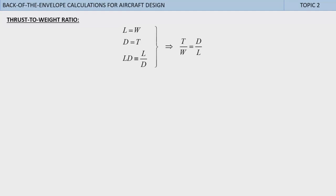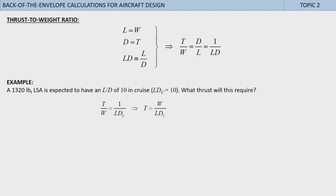From this it holds that by dividing the second equation by the first one, we can say that the ratio of thrust to weight is equal to the ratio of drag to lift, or alternatively, the inverse of the lift-to-drag ratio. The thrust-to-weight ratio is another super-important design parameter in aircraft design. Now let's apply it to determine the thrust required to propel the airplane. A 1,320 pound LSA is expected to have an L/D of 10 in cruise, also written as LDc equals 10. What thrust will this require?